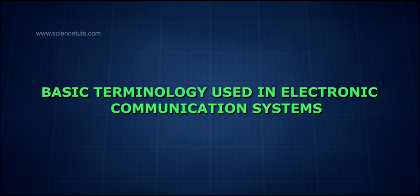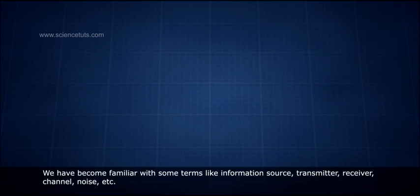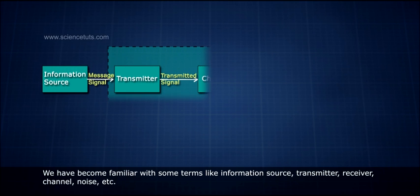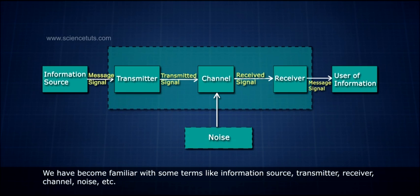Basic terminology used in electronic communication systems. We have become familiar with some terms like information source, transmitter, channel, receiver, noise, etc.